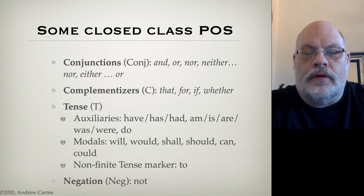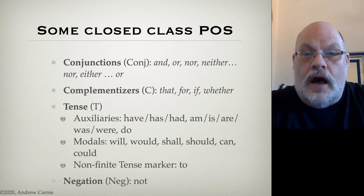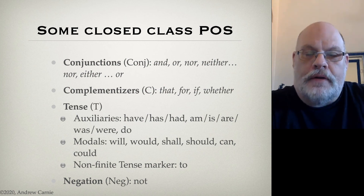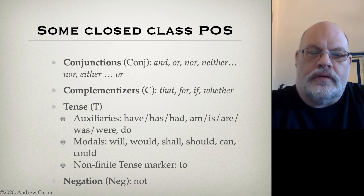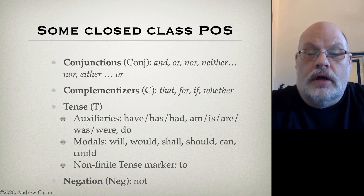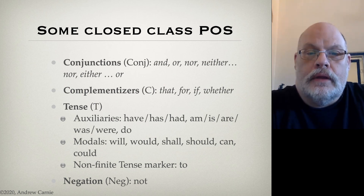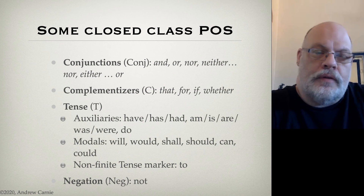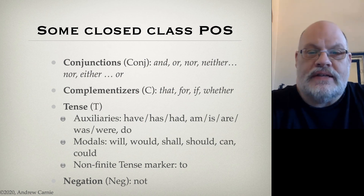Auxiliaries are words like "has," as in "he has gone." Modals often appear in roughly the same position, although they have slightly different distributions. These are words like will, would, should, could, must. And the special non-finite tense marker "to," as in "he wants to leave" — that "to" there. These are all things that we're going to list as the category T in our tree structures when we start drawing them.